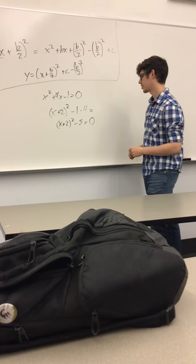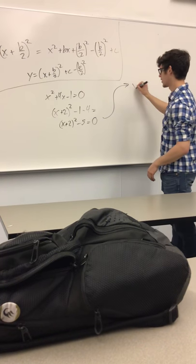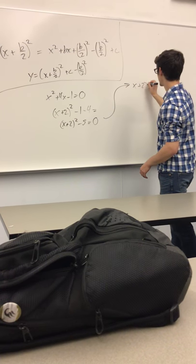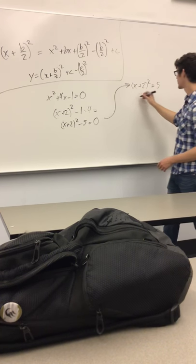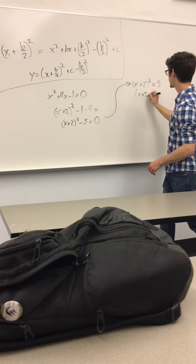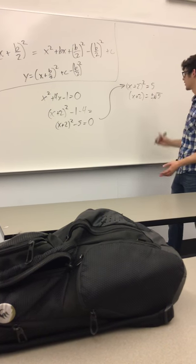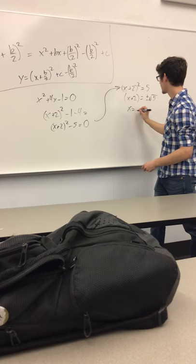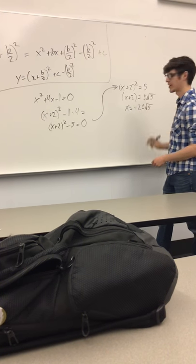To solve this, all we have to do now is add our 5 over, so x plus 2 squared equals 5. Take the square root of both sides, x plus 2 equals plus or minus the square root of 5, and then finally, subtract the 2 over. So our x will be negative 2 plus or minus the square root of 5.